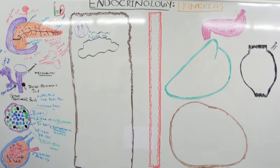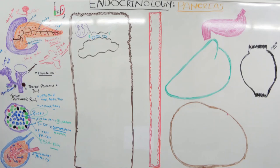Pre-proinsulin contains your signal sequence bound at the N-terminal. The A chain is bound at the carboxyl end. The B and A chains are also connected by two disulfide bridges, and the A chain itself has two internal disulfide bridges embedded within it.